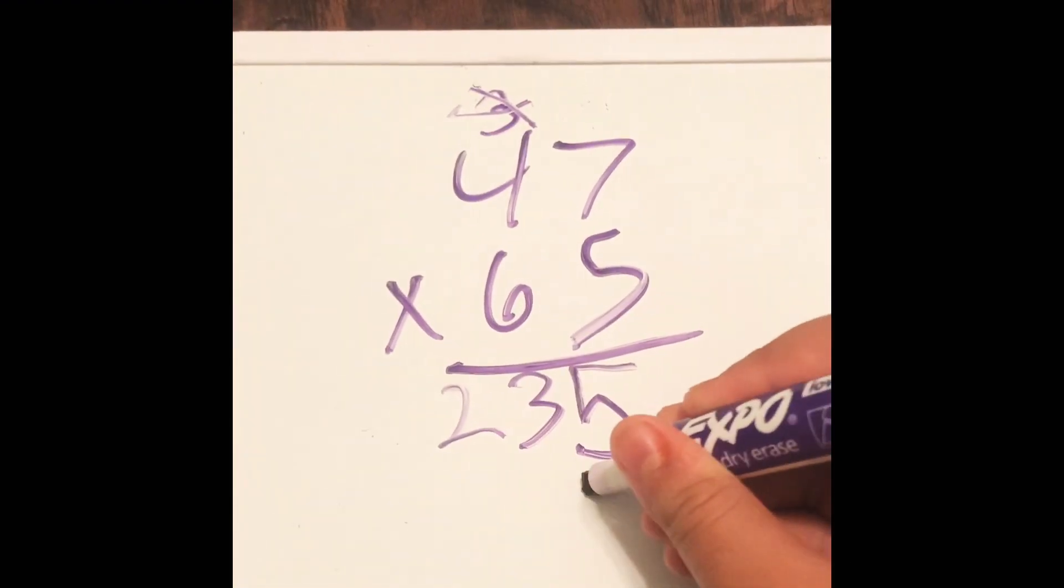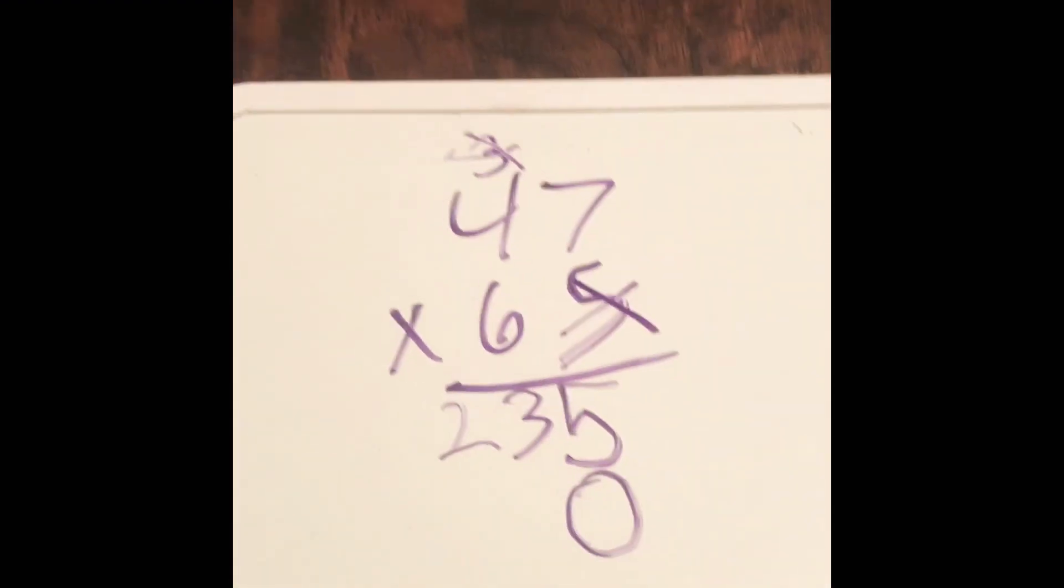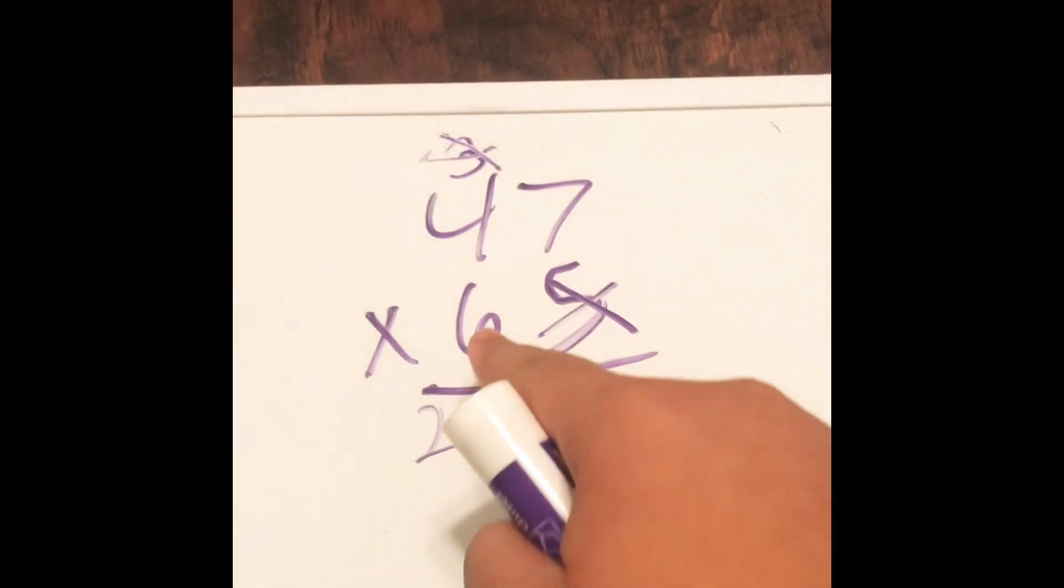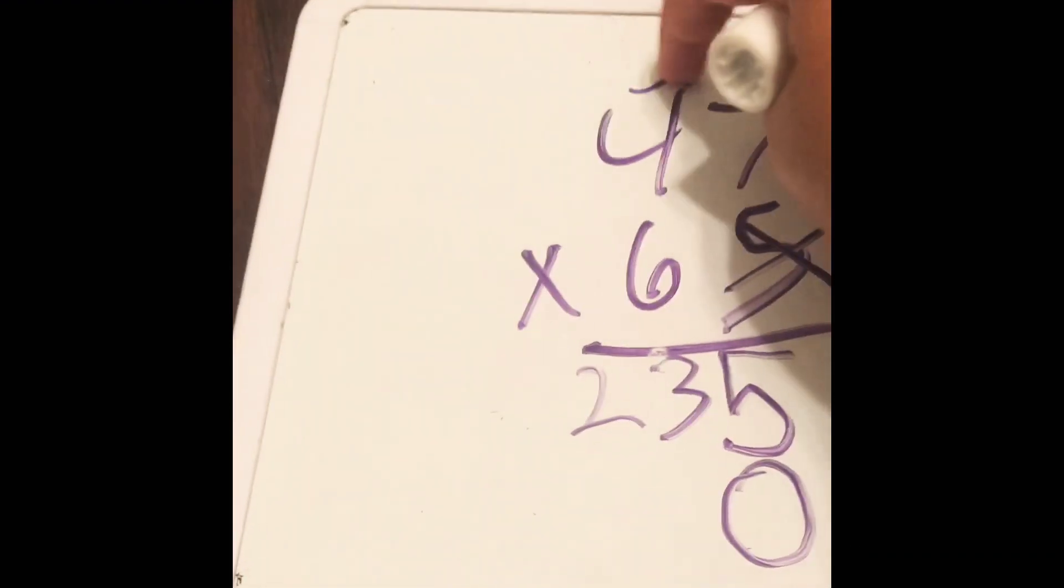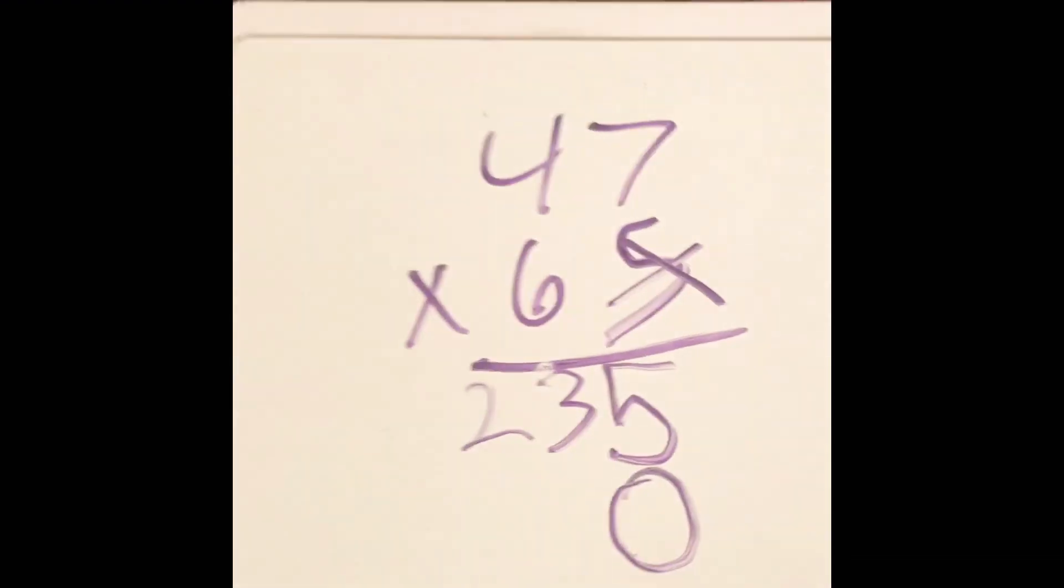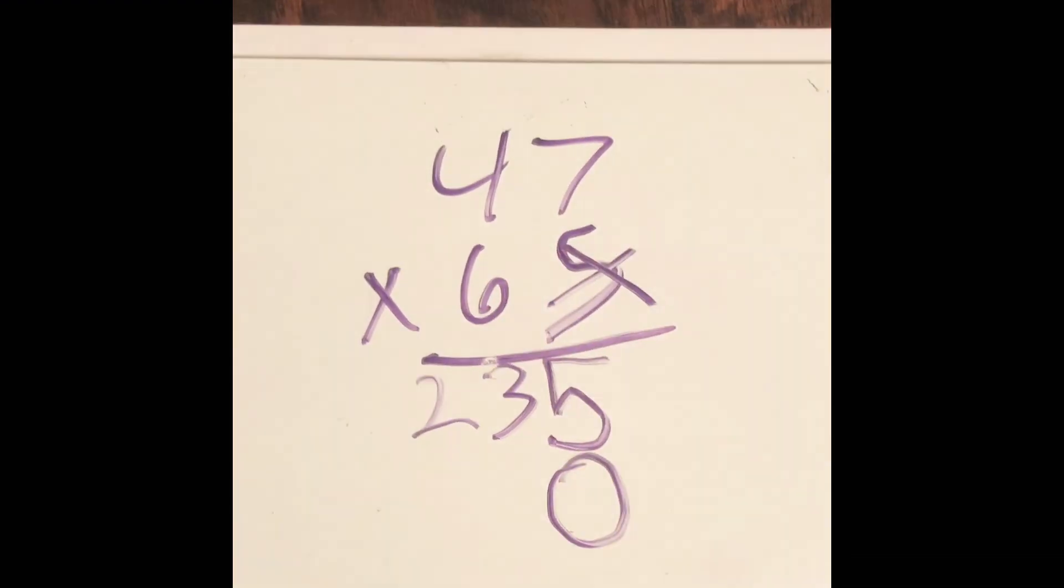And then we put a zero here and then cross out the five because this time we're going to be multiplying the tens by 47. So six times seven equals 42.